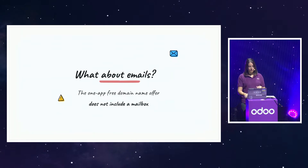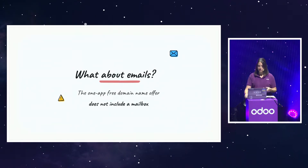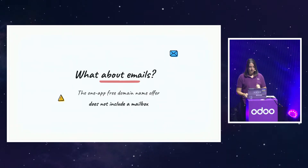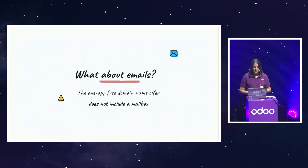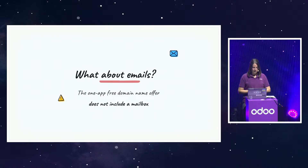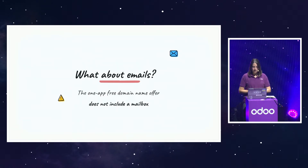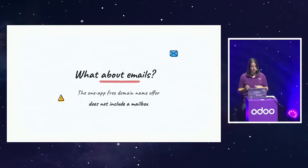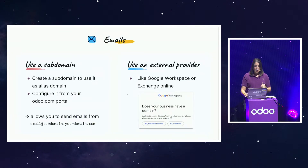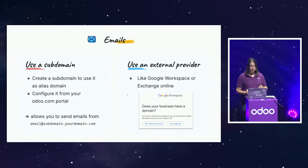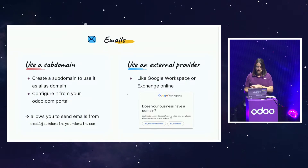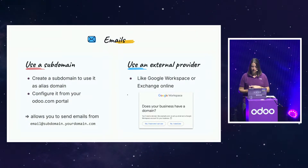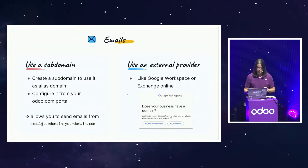Now that I know how to request and use my domain for my website, I will also use it for my email. Is it possible? We do not provide a mailbox with the Odoo free domain, but we have solutions to help you set up your own domain for your communication. Note that modifying your records and configuring your email requires a bit of technical knowledge. If you don't have that, we advise you to use the Odoo subdomain by default. To use your free domain for email, you have two main options. One: the subdomain. You can set up an email using a subdomain of your existing domain, for example mail.mydomain.com. It's a quick and easy configuration, ideal if you're looking for a simple solution.